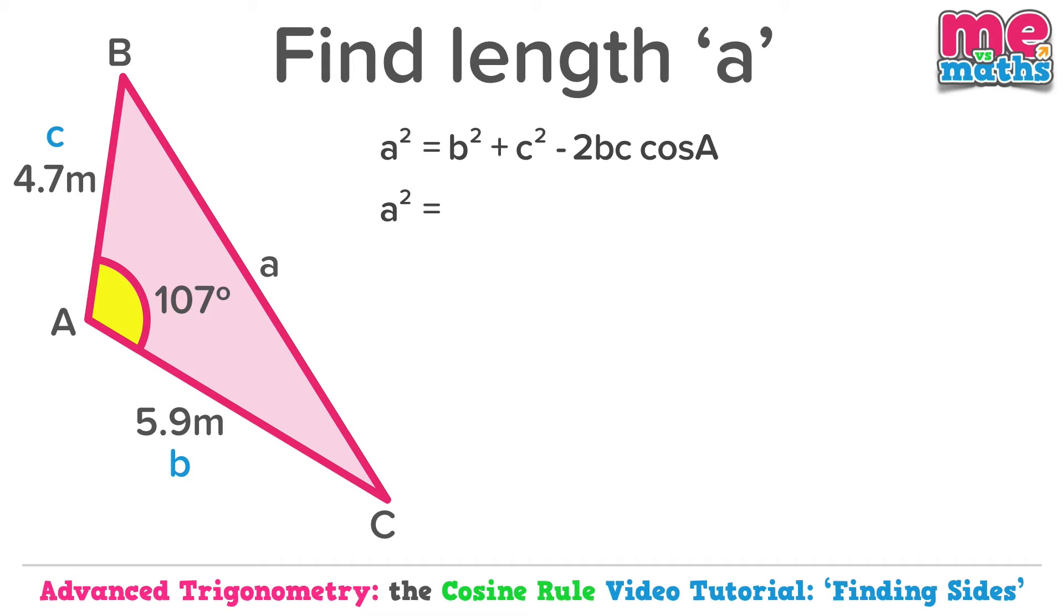a squared is equal to—slowly now, step by step—b squared, so 5.9 squared, plus c squared, so add 4.7 squared. Now it's the next part where I think a lot of mistakes are made. Minus 2bc cos A.